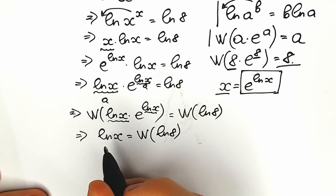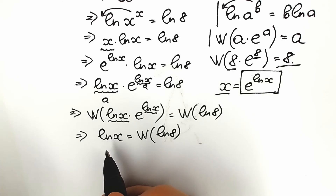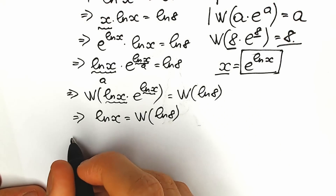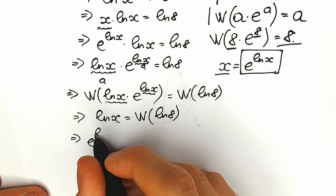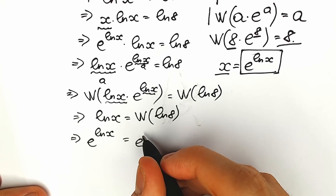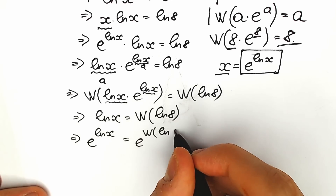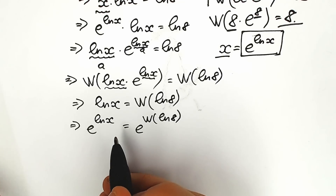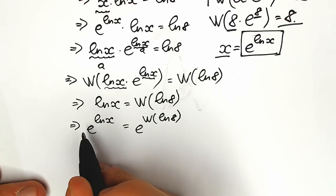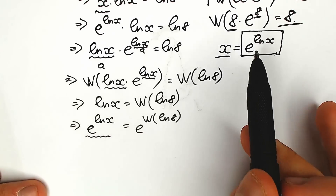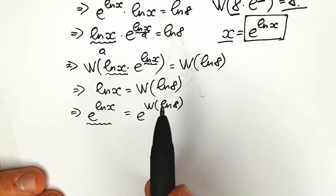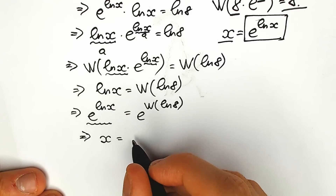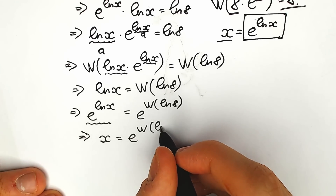Now let's solve for x. We don't want natural log x — we want x. We use the approach of creating base e on both sides: e to the power natural log x equals e to the power Lambert W of natural log 8. On the left side, e to the power natural log x simplifies to just x. So x equals e to the power Lambert W of natural log 8.